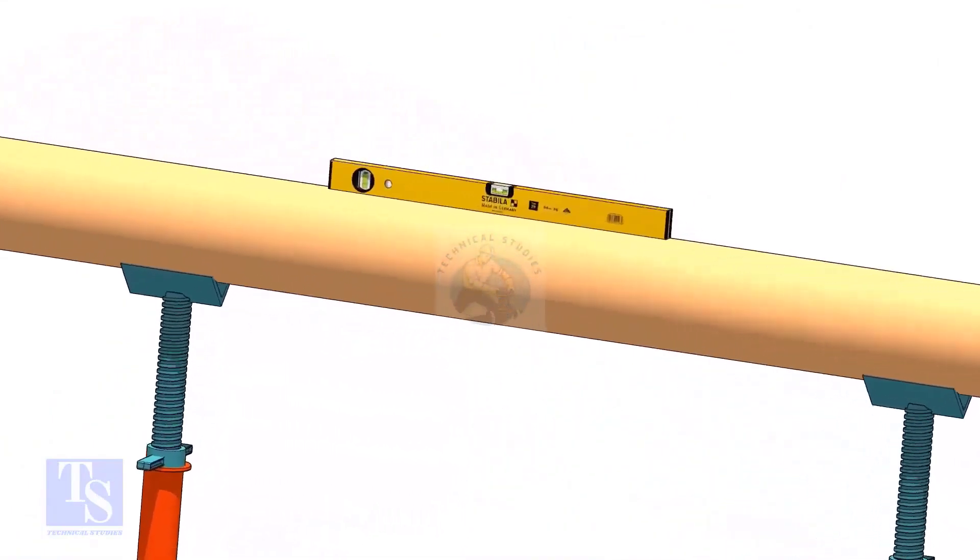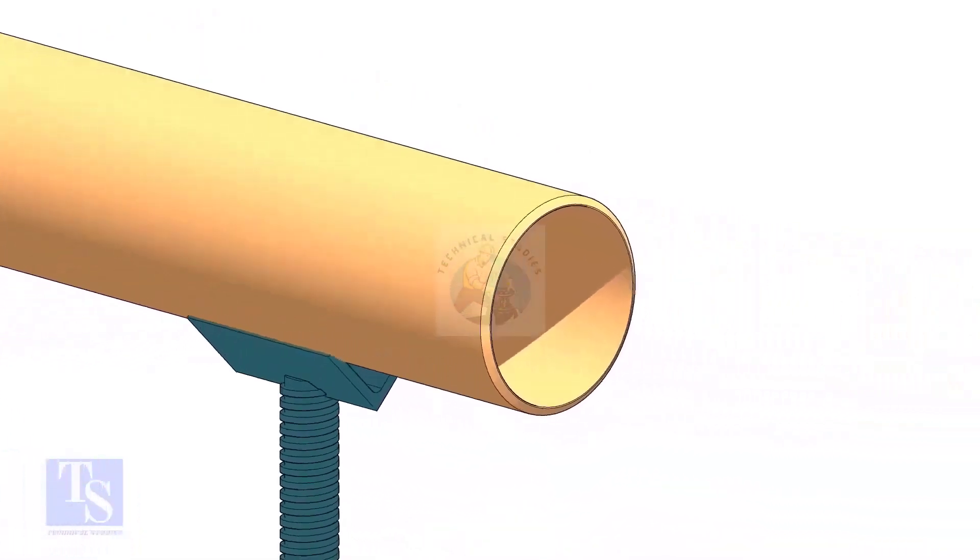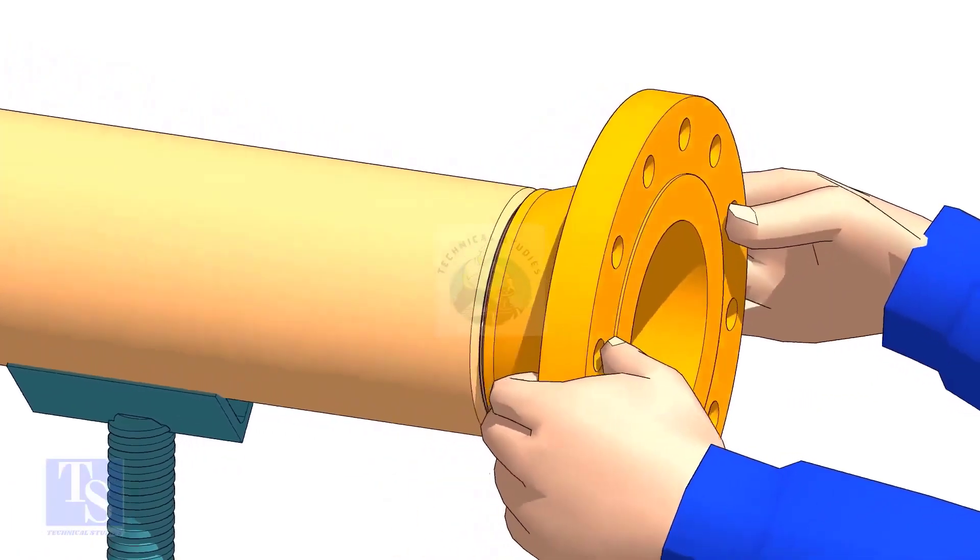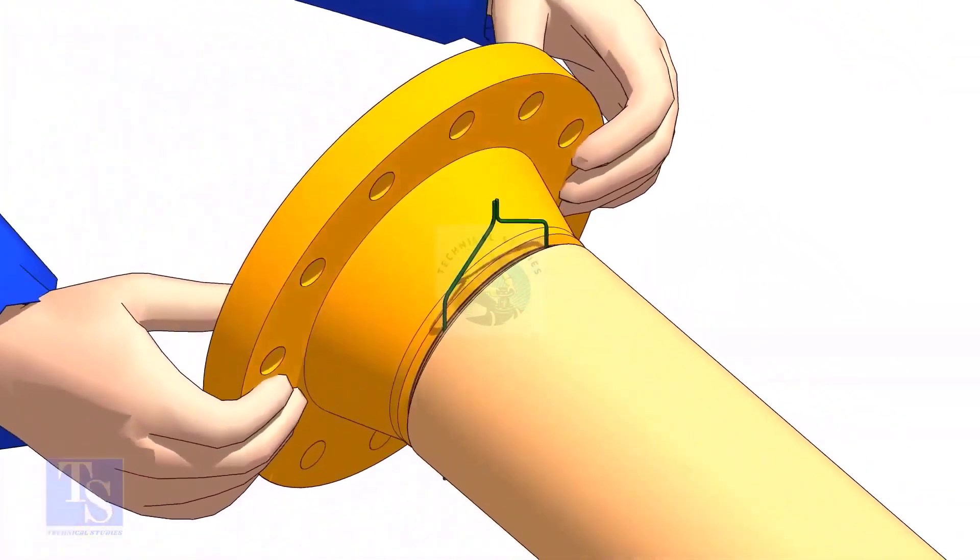Level the pipe. Hold the flange on the pipe face as shown. Put the gap rod in the joint. Look through the flange and the pipe and adjust the overlap.